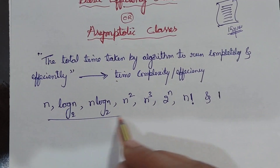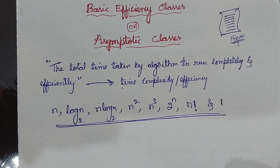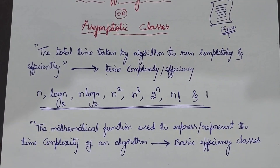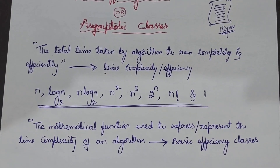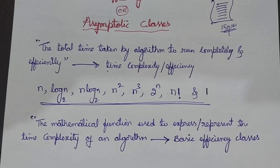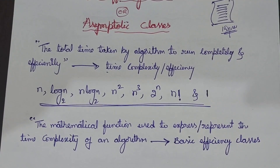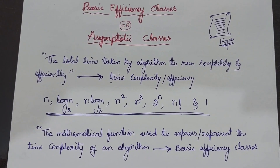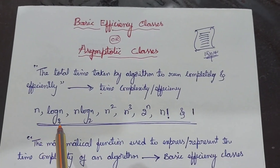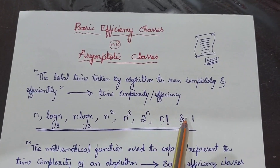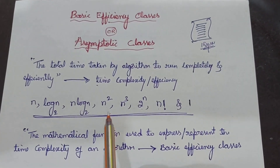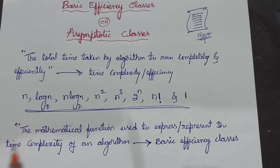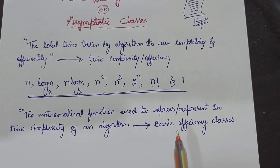The mathematical function used to express or represent the time complexity of any algorithm is called a basic efficiency class. From now onwards, whenever we do analysis of an algorithm to know its efficiency, we have to use any one of these mathematical functions — n, log n, n log n, n², n³, 2 to the power of n, n factorial, or 1. The definition: the mathematical function used to express the time complexity of an algorithm is called a basic efficiency class.